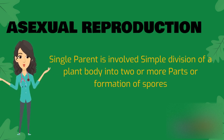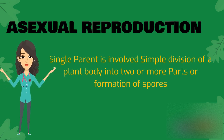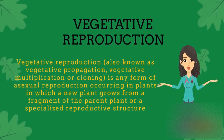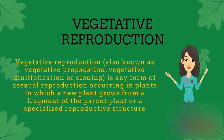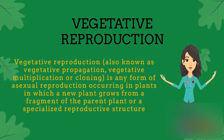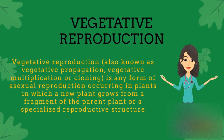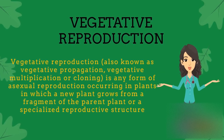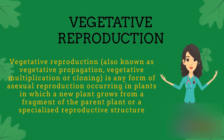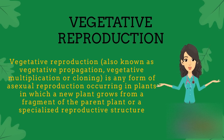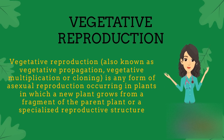Spore formation is also a kind of asexual reproduction in which spores can grow independently. Vegetative reproduction, also known as vegetative propagation, vegetative multiplication, or cloning, is any form of asexual reproduction occurring in plants in which a new plant grows from a fragment of the parent plant or a specialized reproductive structure.